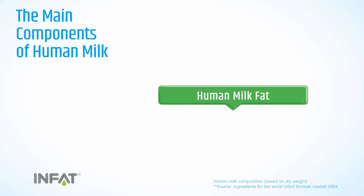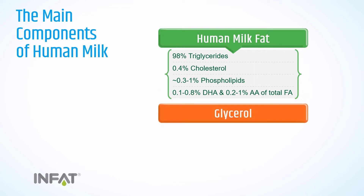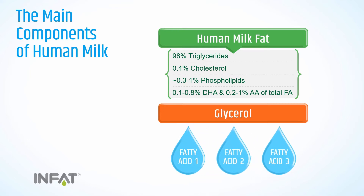The fat is primarily made up of molecules called triglycerides, composed of three fatty acids attached in a specific order called SN1, SN2, and SN3.